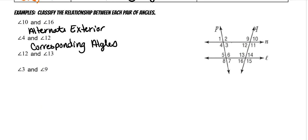Then angles twelve and thirteen. Twelve is here, thirteen is here, which means this is the transversal. They're on the same side of the transversal on the inside, so they are consecutive interior angles.